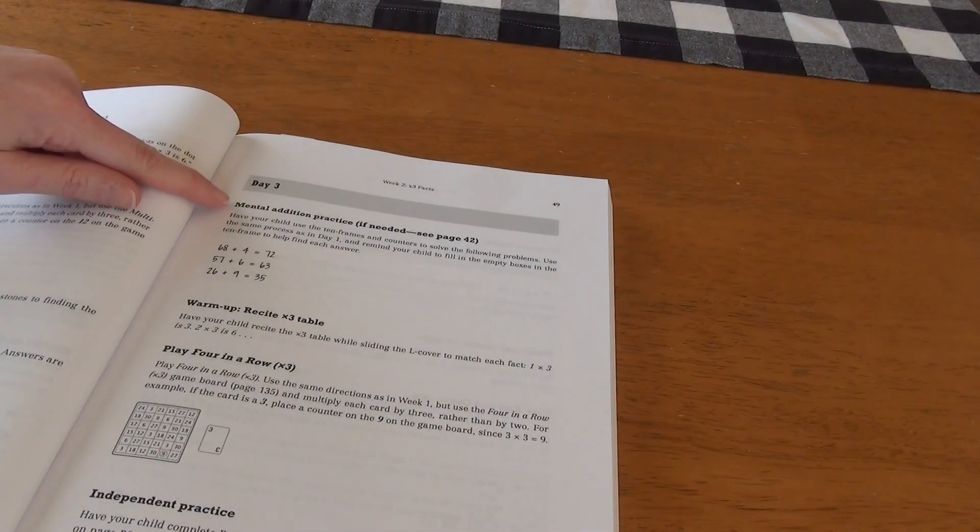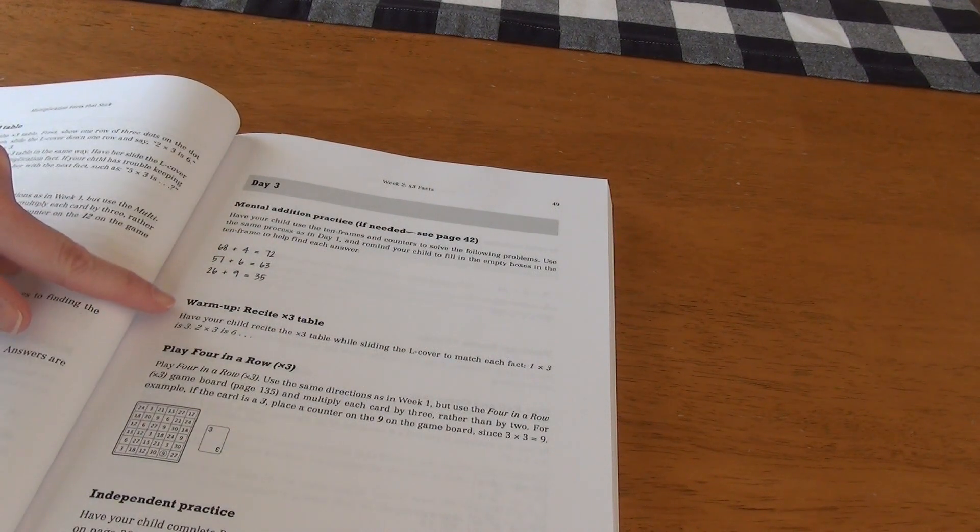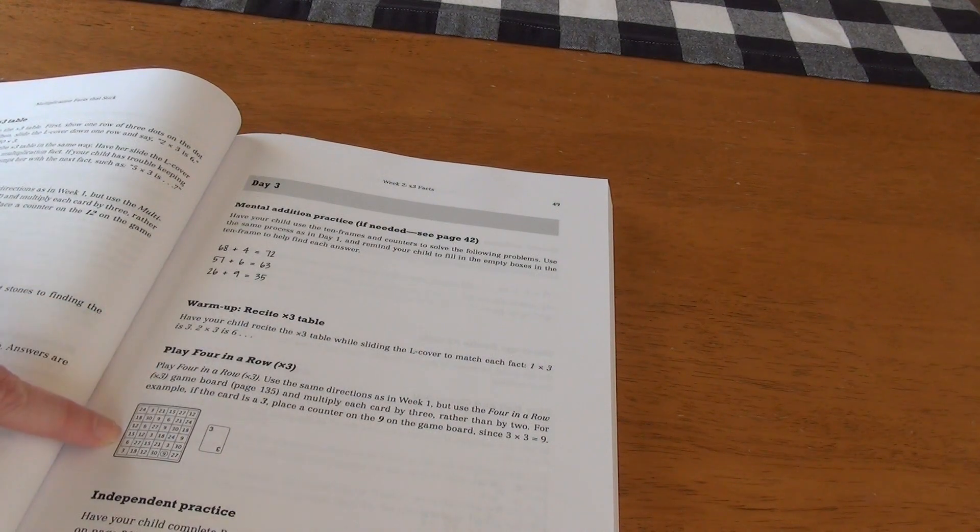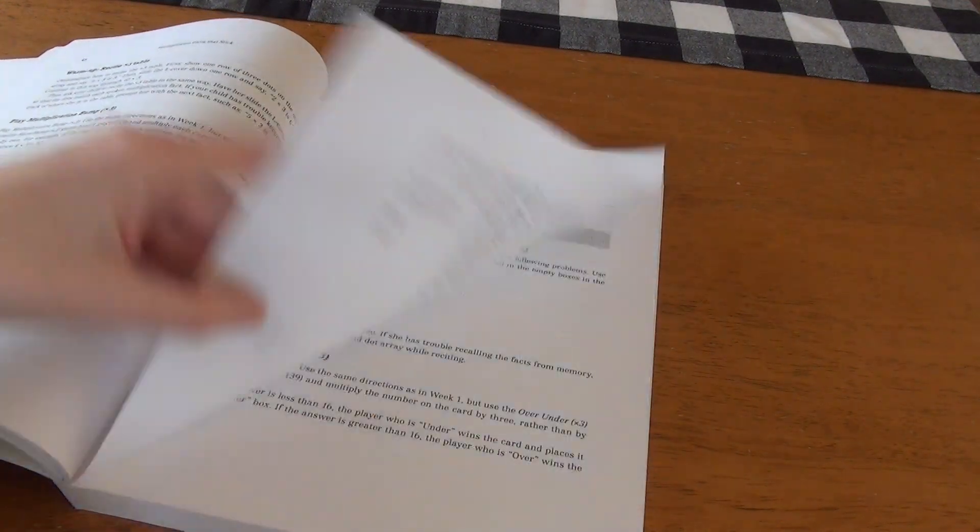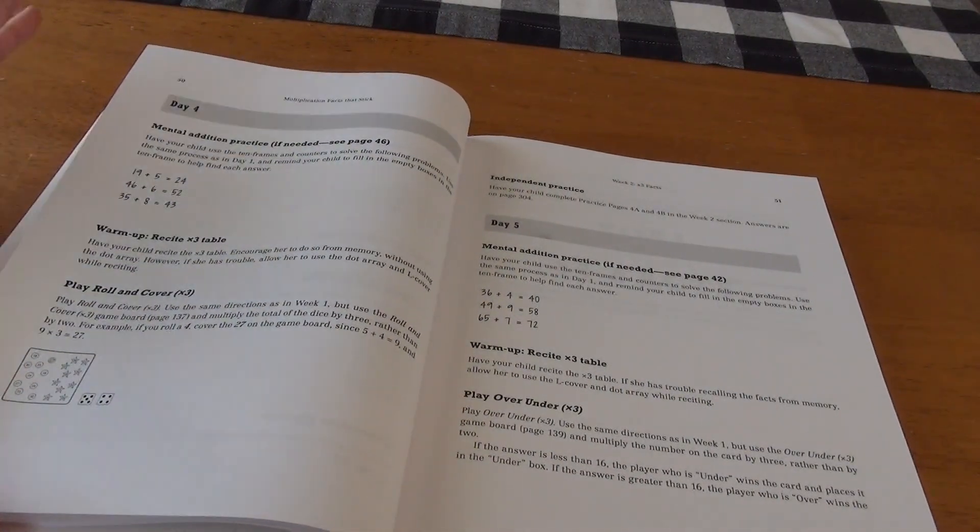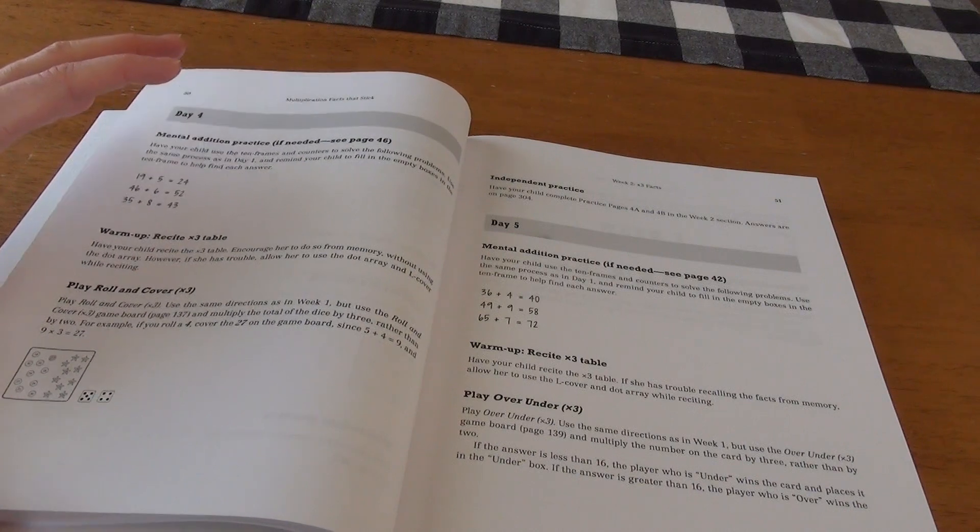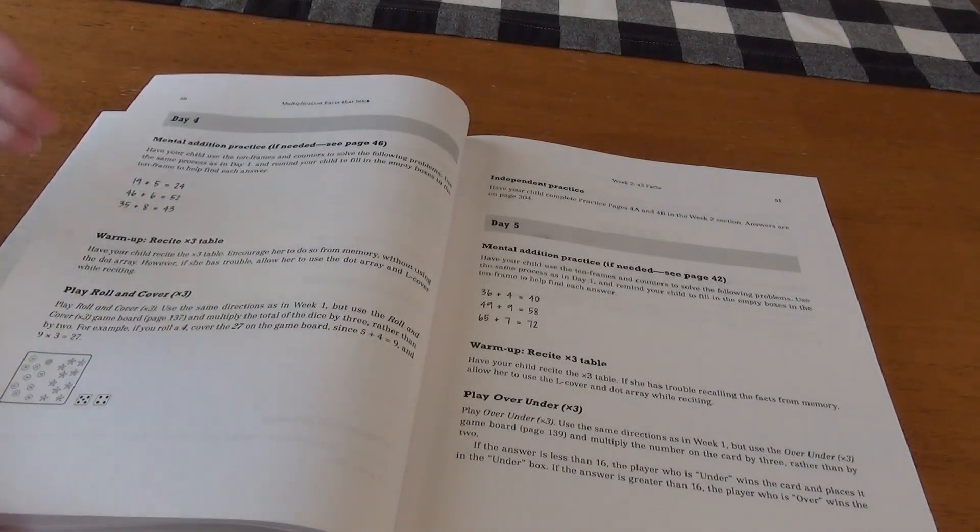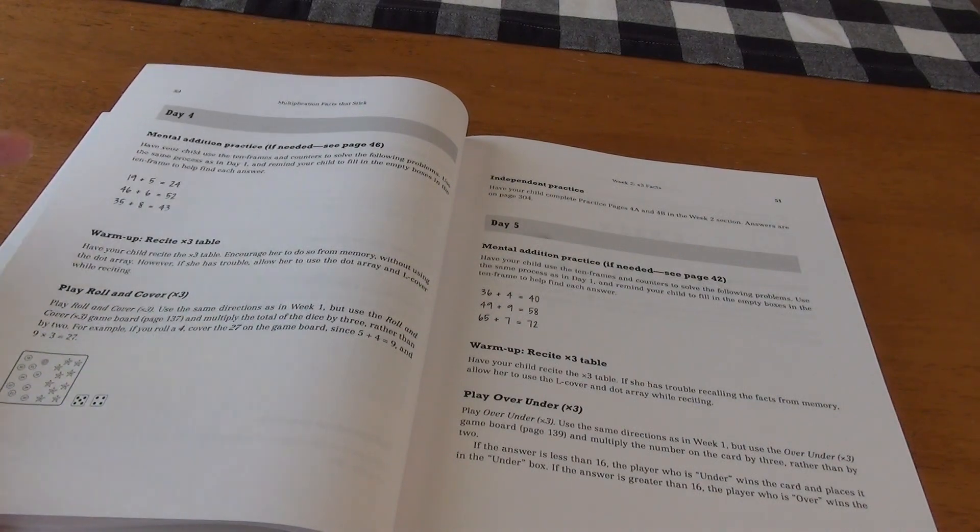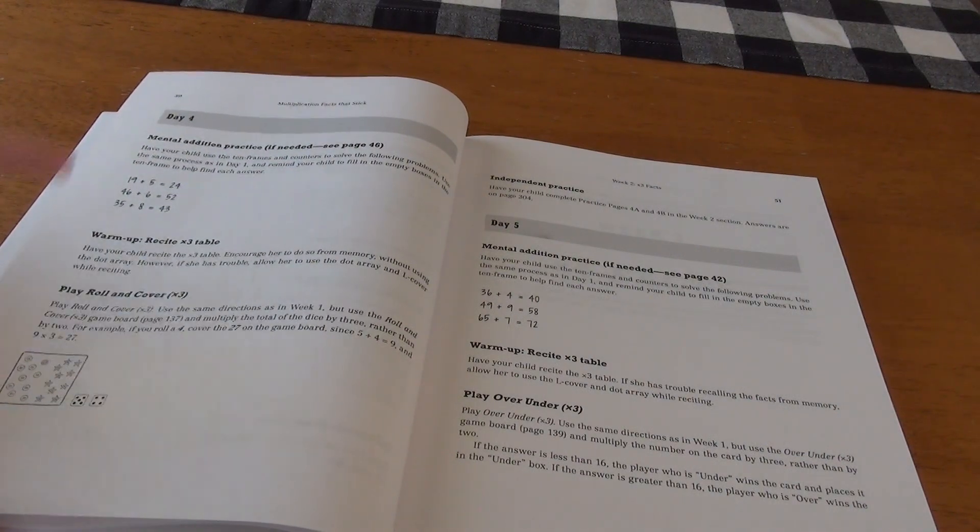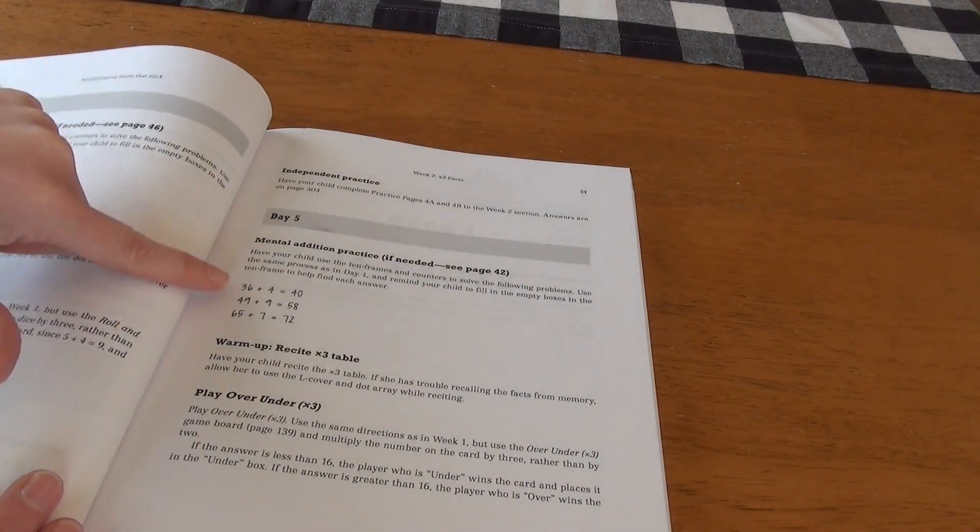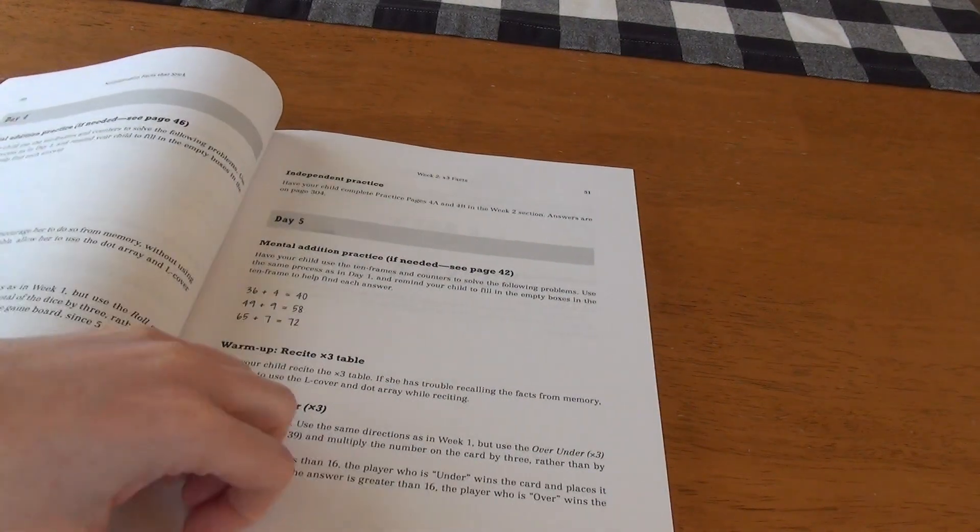Day three, we have our mental addition practice. Again, we have our warmup where we're reciting our times three tables. Then we're going to play four in a row. And then we have our independent practice. Then day four. So you can see that these other days are much shorter and the content that you're going to be covering because you're just practicing these facts in fun ways. Again, mental addition practice, warmup, play, roll and cover. But you're doing each of these with the fact for the week. Day five, mental addition, warmup, play over and under.